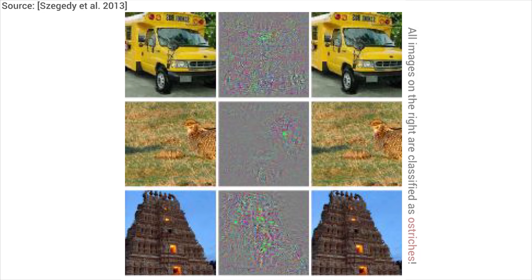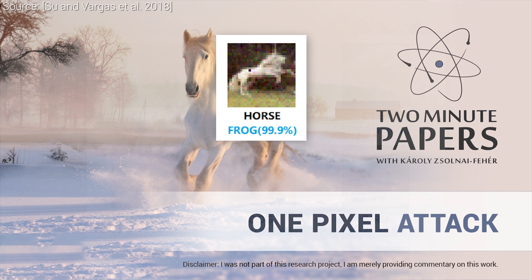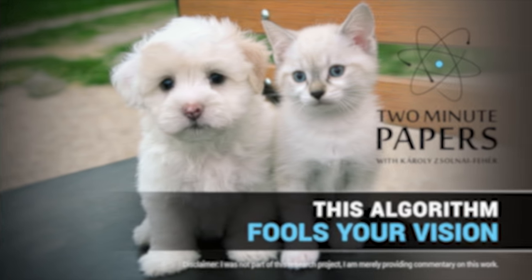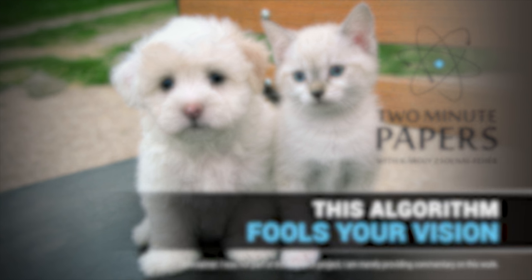So of course, we may think that neural networks are much smaller and simpler than the human brain, and because of that, of course we cannot perform such an adversarial attack on the human vision system, right? Or is it possible that some of the properties of machine vision systems can be altered to fool human vision? And now, hold on to your papers — this algorithm performs an adversarial attack on you.